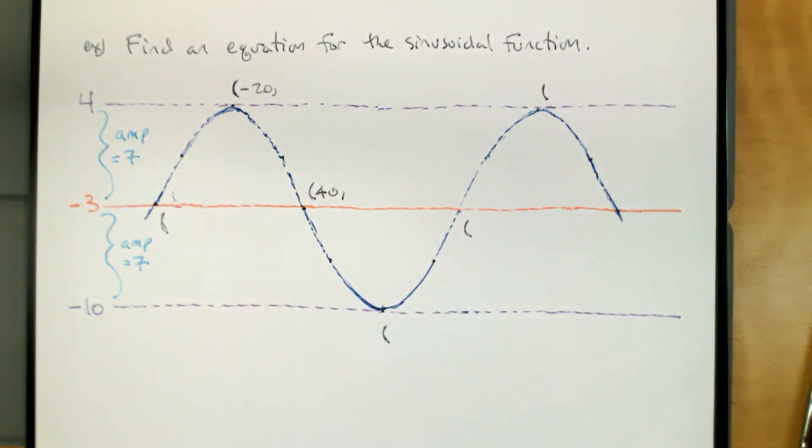So we've got some values figured out already. The coefficient of whatever function we pick is going to be a seven. And there's going to be a minus three at the very end. That's our vertical shift of negative three and our amplitude of seven.